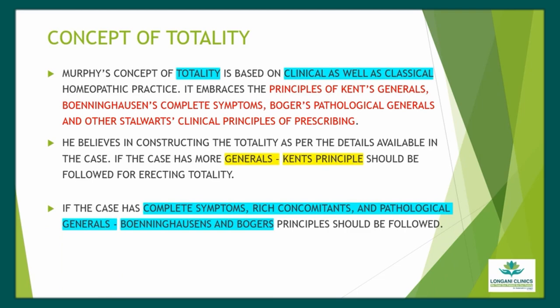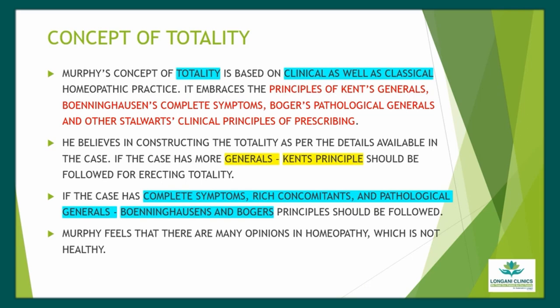Murphy's concept of totality is based on clinical as well as classical homeopathic practice. It embraces the principles of Kent's generals, Boning Hasan's complete symptoms, Bogart's pathological generals, and other stalwarts' clinical principles of prescribing. He believes in constructing the totality as per the details available in the case. If the case has more generals, Kent's principle should be followed. If the case has complete symptoms, rich concomitants, and pathological generals, Boning Hasan's and Bogart's principles should be followed. Murphy feels that there are many opinions in homeopathy, which is not a healthy sign.